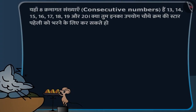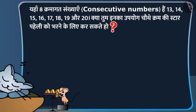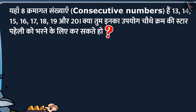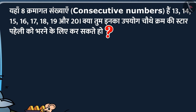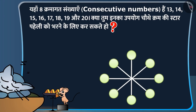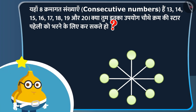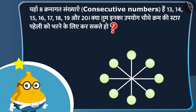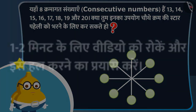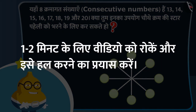यहाँ पर आठ क्रमागत संख्याएं यानि कॉन्सेकिटिव नंबर्स हैं: तेरह, चौदह, पंद्रह, सोलह, सत्रह, अठारह, उनिस और बीस। क्या तुम इनका उपयोग चौथे क्रम की स्टार पहेली को भरने के लिए कर सकते हो? प्यारे बच्चों, फ्रूटी इस पहेली को हल करने की पूरी कोशिश कर रहा है। अब आप भी इस वीडियो को रोककर पहेली को हल करने का प्रयास कर सकते हैं।